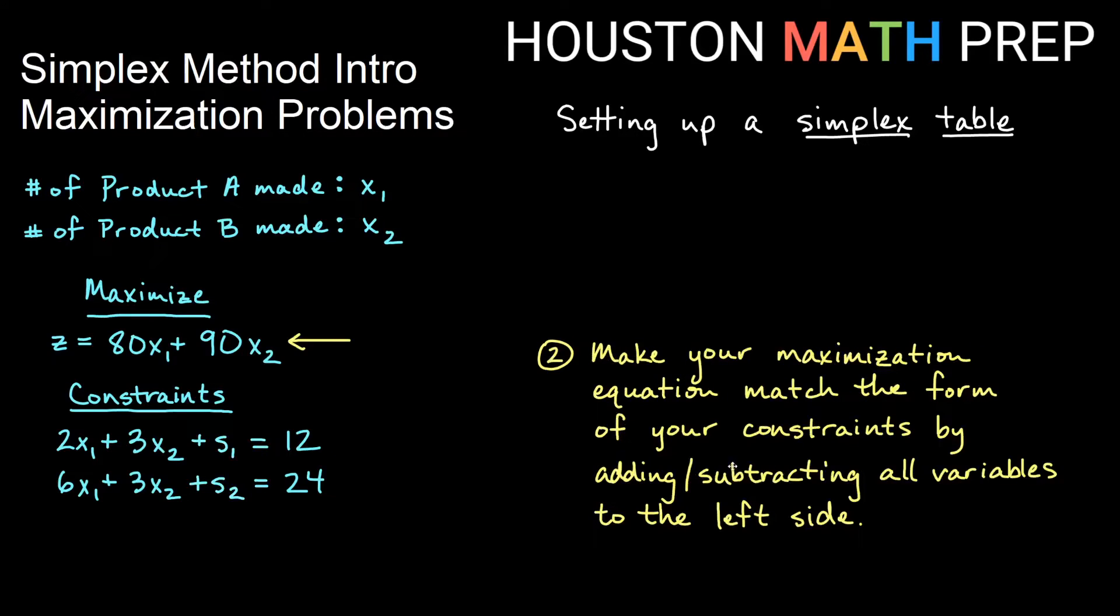We will also need to change our maximization equation so that it looks more like our constraints. Our constraints have all of our variables on the left side equal to some constant, some number on the right side. This is not that way. We have a variable on the left side, but we also have variables on the right side. Generally, what that means is you want to add or subtract these terms and they will become the opposite sign on the other side of the equation. So if we do that and we subtract these two terms to the other side, then we'll get our variable terms all on the left side equal to a number. In this case, it's always going to be equal to zero for our maximize equation because we're just moving all of the variables over to the left side.